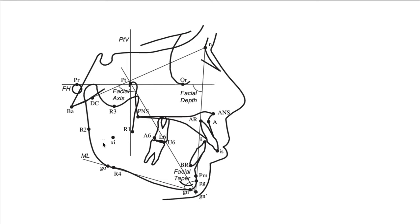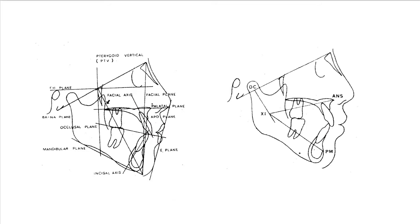This shows the points and planes in Ricketts analysis: PT point, DC point, R1, R2, R3, R4, Xi point, mandibular plane, facial axis, and the nasion-pogonion facial plane. Through these angular measurements, Dr. Ricketts describes facial height and shows open bite or deep bite tendency. This is the outline of Ricketts analysis.